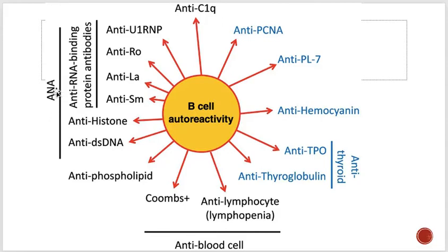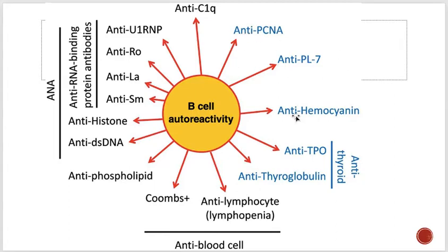Anti-nuclear antibodies — as the name shows — are antibodies that bind to the cell nucleus. Beyond ANA, there are antiphospholipid antibodies, anti-lymphocyte, anti-thyroglobulin, and anti-TPO antibodies — the anti-thyroid ones we covered in endocrinology when studying Graves' disease and Hashimoto's. Some antibodies like anti-hemocyanin and anti-PL7 are not important for basic exams — Kaplan's does not cover them — so there is almost no chance you will be asked about them.